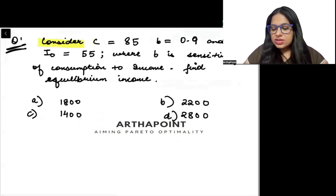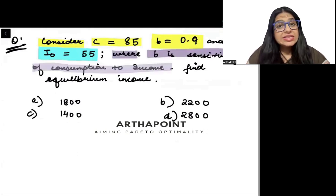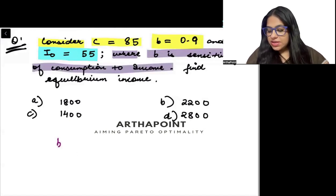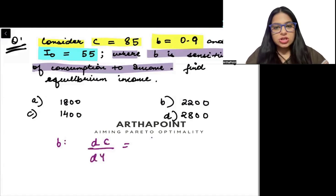You are given, consider consumption C is 85 and B is given to you as 0.9 and I is given to you as 55. Now, it says where B is sensitivity of consumption to income, it is telling B is how consumption changes as income changes, change in consumption due to change in income.